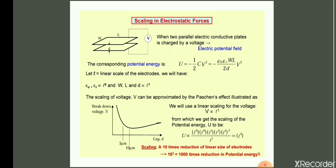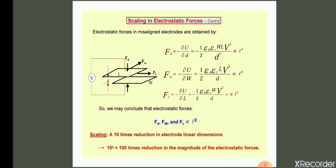Next, we consider electrostatic forces in misaligned electrodes. The three electrostatic forces are F_D (related to gap D), F_W (related to width W), and F_L (related to length L). Using the same scaling procedure with ε₀, εᵣ, W, L, V, and D, we find that F_D, F_W, and F_L are all directly proportional to L². A 10-times reduction in electrode linear dimension leads to a 100-times reduction in electrostatic force.